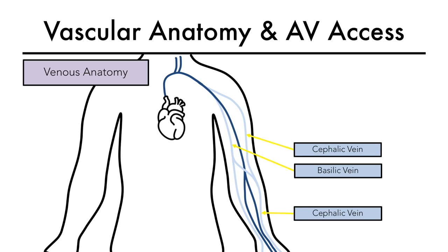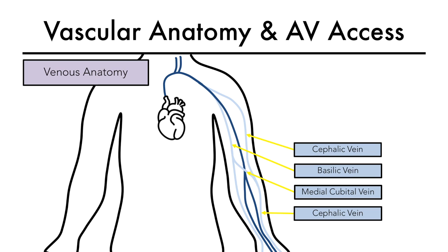The cephalic and the basilic vein connect at the antecubital fossa by the median cubital vein, also called the median basilic vein. All three veins can be used for creation of dialysis access. Ultimately, the superficial veins drain into the subclavian vein, which then joins with the jugular veins in the neck to drain into the brachiocephalic vein. The brachiocephalic vein finally drains into the superior vena cava.